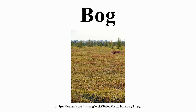A bog is a mire that accumulates peat, a deposit of dead plant material, often mosses, and in a majority of cases, sphagnum moss. It is one of the four main types of wetlands. Other names for bogs include mire, quagmire, and muskog. Alkaline mires are called fen. They are frequently covered in ericaceous shrubs rooted in the sphagnum moss and peat. The gradual accumulation of decayed plant material in a bog functions as a carbon sink.